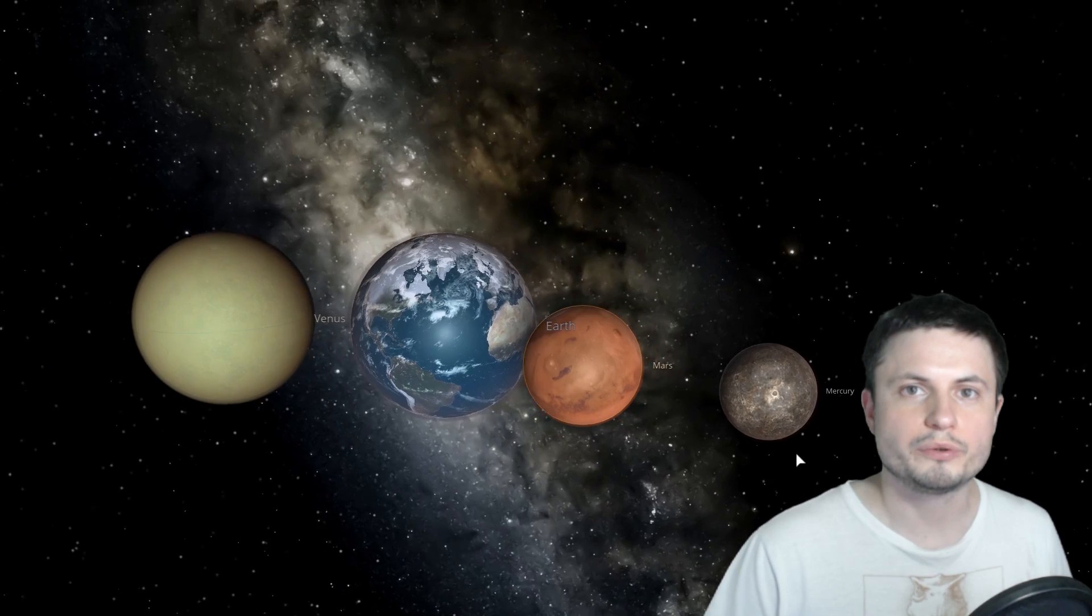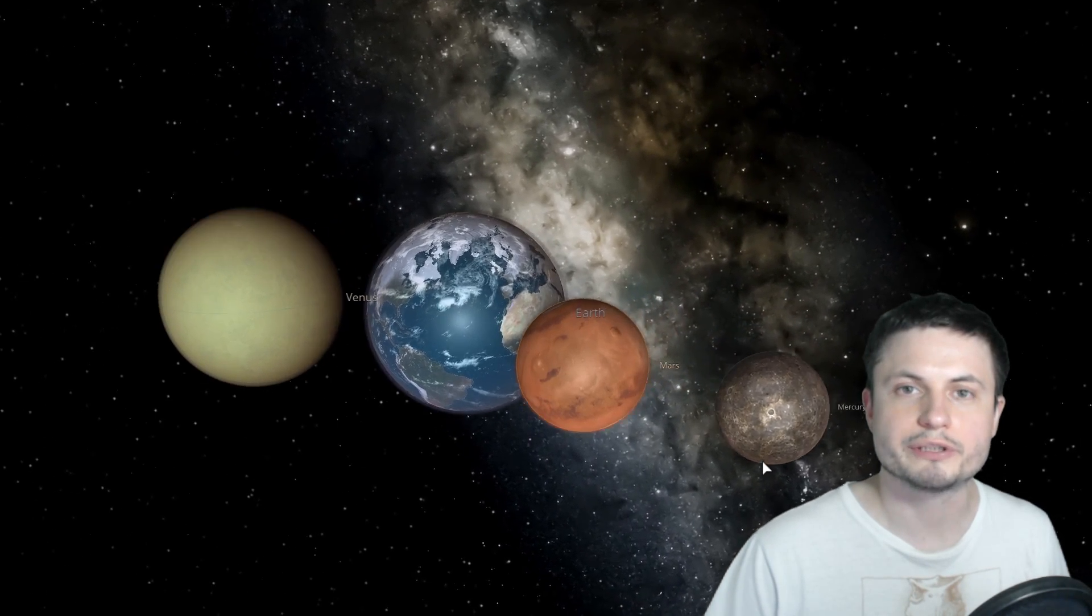So when it comes to the terrestrial planets of our solar system, it's really two that actually possess any kind of magnetic field. This one here, Mercury, has a very weak but still functional magnetic field and of course our planet Earth that still has a relatively powerful field around it.